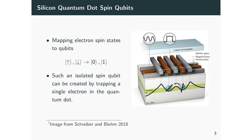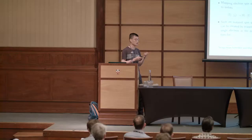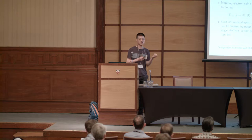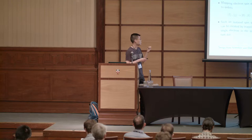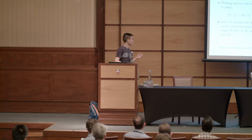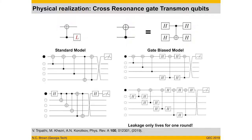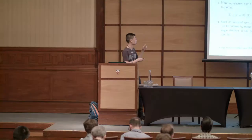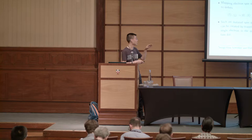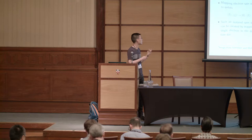Silicon qubit — the most simple one — is mapping the spin of a single electron to the zero and one state. To isolate this single electron, it can be done via trapping them in quantum dots or via using electrons in impurity atoms in silicon. In the quantum dot, basically, if you have this kind of semiconductor heterostructure at the interface, you will have some two-dimensional electron gas. If you put some gate electrodes on top, you can create a potential well to trap the electrons. Then you apply a constant magnetic field to split the degeneracy of the spin-up and spin-down state, creating your quantum dot spin qubits.